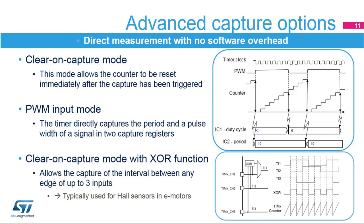The clear-on capture mode causes a counter reset immediately after the capture has been triggered. This allows a direct measurement of the period, while a traditional free-running counter would require additional computation. In PWM input mode, the timer is able to capture both the period and the duty cycle of an incoming PWM signal. The input signal is internally routed to two capture channels. The signal's rising edge is captured on input capture 2 to provide the period value with the clear-on capture mode, while the falling edge is captured by the capture 1 channel, providing the pulse length duration.